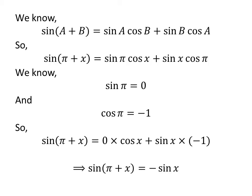As 0 times cosine of x is equal to 0, and sine of x times minus 1 is equal to minus sine of x. So, sine of pi plus x is equal to 0 minus sine of x, which is equal to minus sine of x.